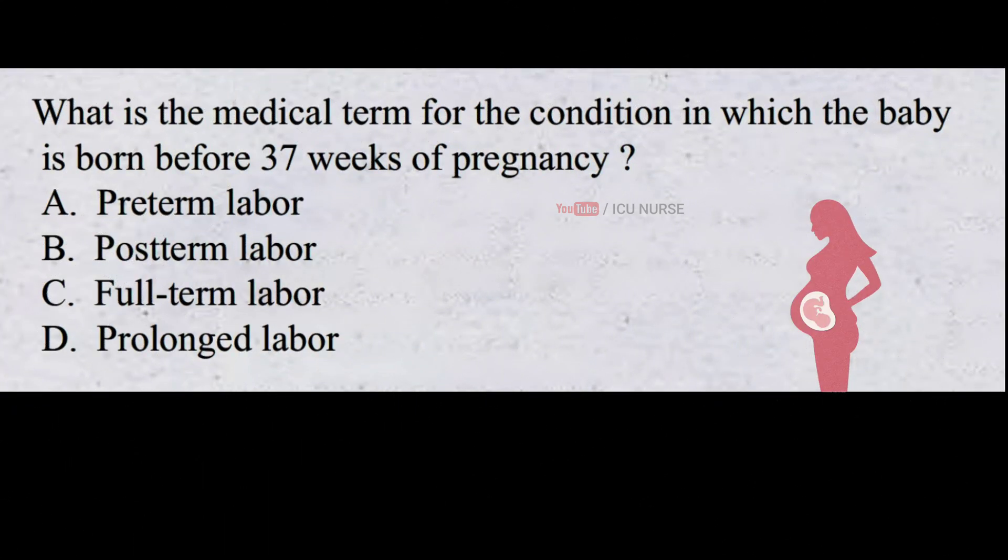What is the medical term for the condition in which the baby is born before 37 weeks of pregnancy? A. Preterm labor. B. Post-term labor. C. Full-term labor. D. Prolonged labor. And the correct answer is A. Preterm labor.